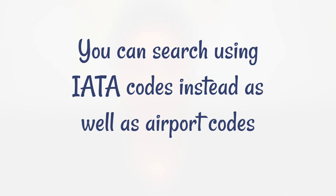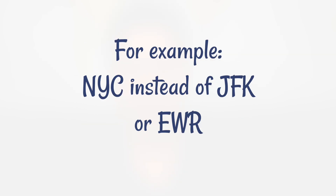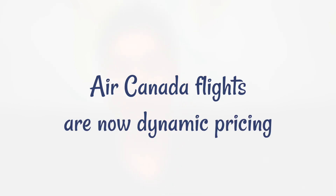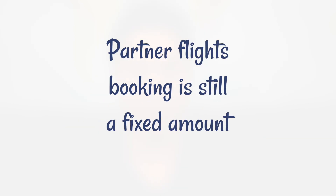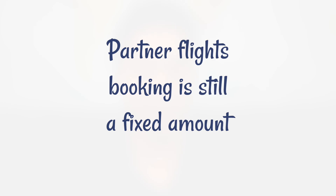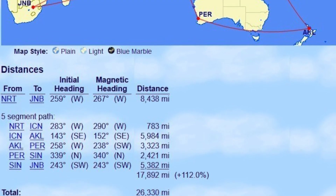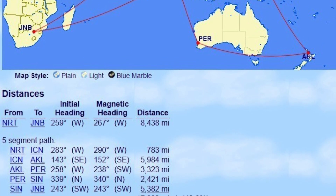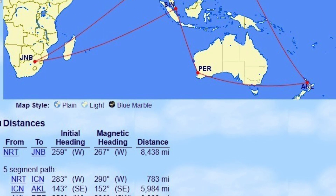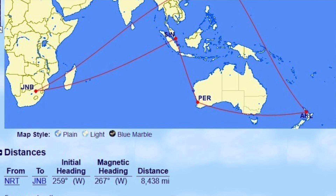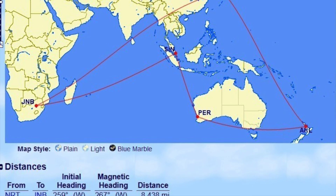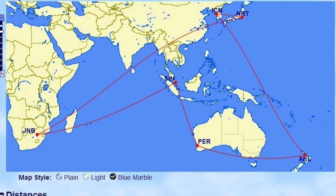You can now search using IATA metro codes — for example, NYC instead of JFK or EWR. Air Canada flights now have dynamic pricing, while partner flights still have a fixed price. Flying more than 100% of the direct distance between two points breaks the circuitous routing rule. However, at the time of this video, this rule does not seem to be heavily enforced, though it may be stricter in the future.